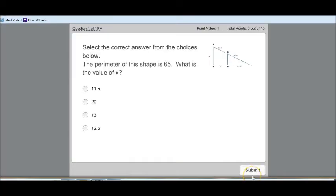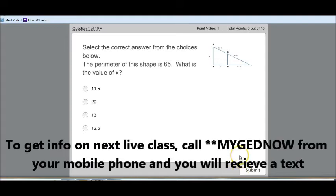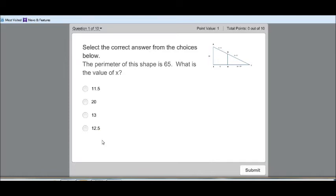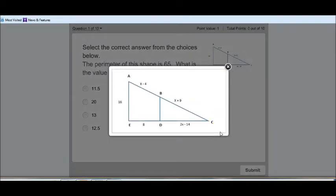Then we jump into the problem here. The problem says select the correct answer from the choices below. We have these multiple choice options here. The perimeter of this shape is 65. What is the value of X? We have this picture here. We can't really see it that well, so we just click on it. Then the image will come up bigger on the screen. And then we will be able to see it and work with it that way. We have this image here. Now we want to go to the whiteboard that I showed you earlier and show you how we're going to work with this problem.